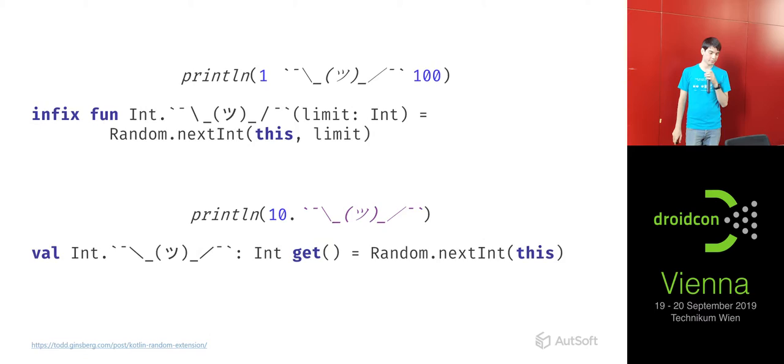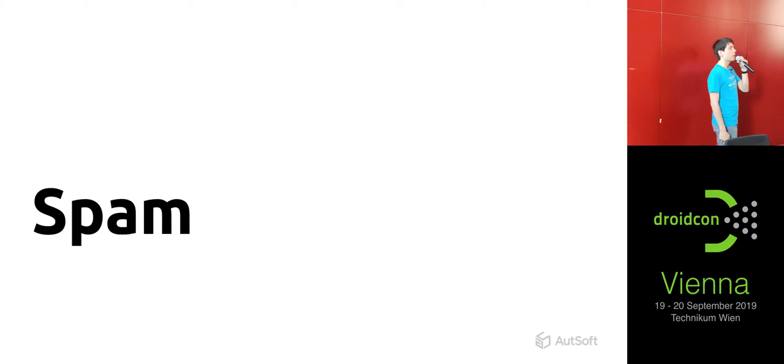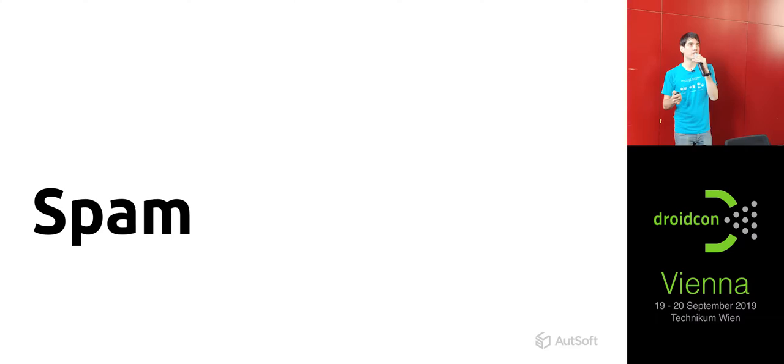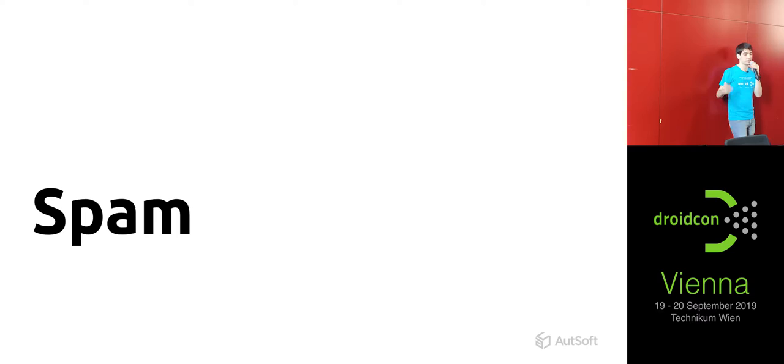Okay, so that's it for our first section. We're going to move on to 'Spam'. This section is going to contain things you can put in your codebase which will look like they do something, but in reality none of them do anything. They will be very confusing for anyone else who wants to work in your codebase — basically a good way to guarantee your own job security.